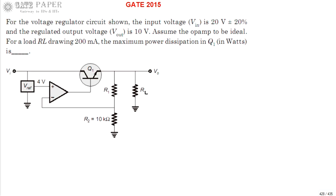Hello, we are discussing the GATE 2015 ECE paper. Look at the circuit diagram — it has a voltage regulator circuit. The input voltage is 20 volts plus or minus 20 percent, and the regulated output voltage is 10 volts. Assume the op-amp is ideal. For a load RL drawing 200 milliamperes, find the maximum power dissipation in Q1.